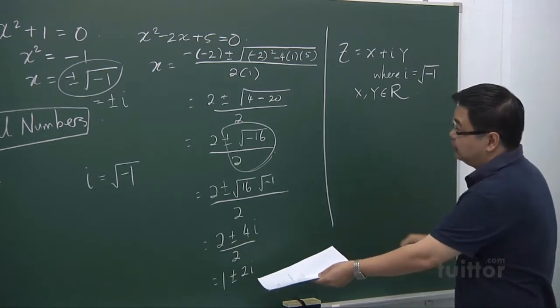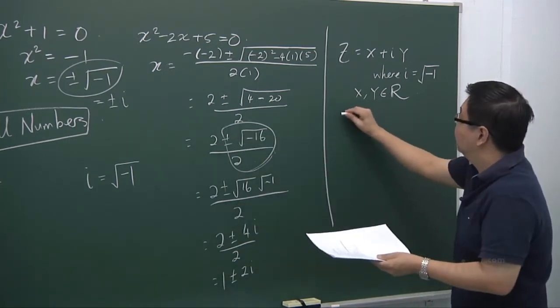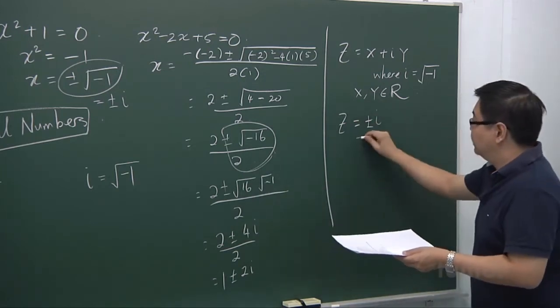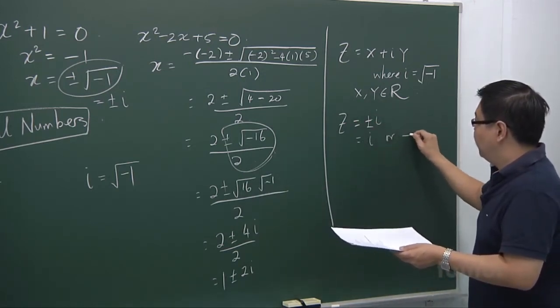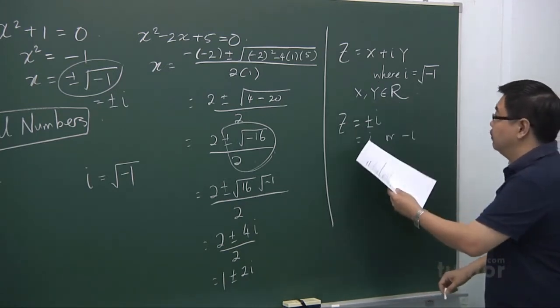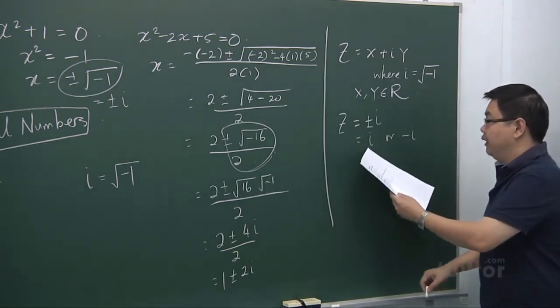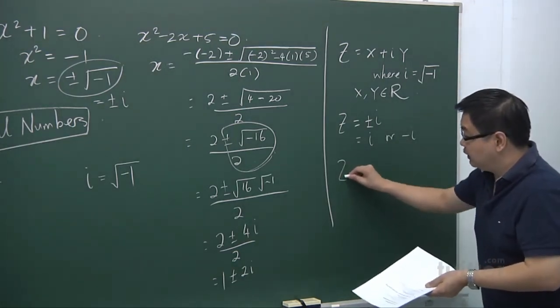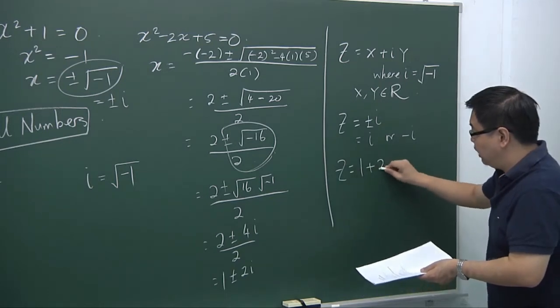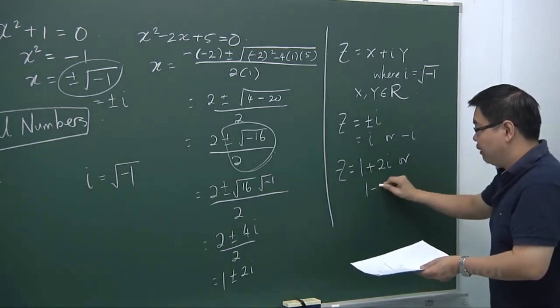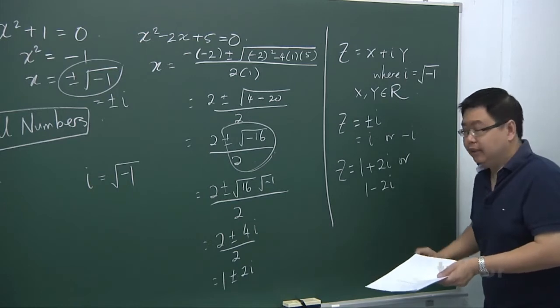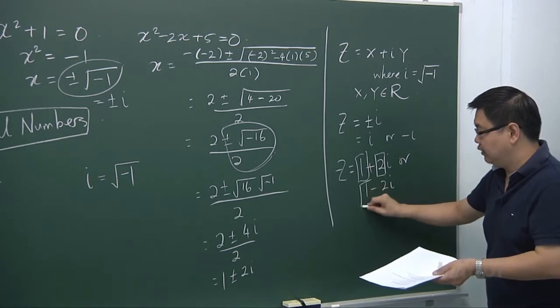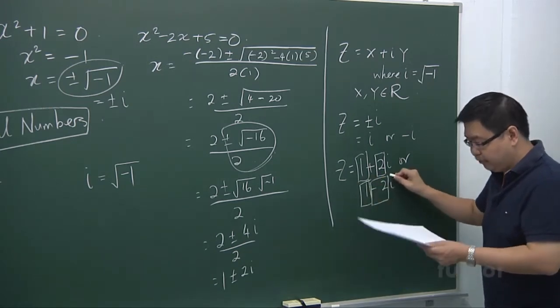So in other words, for example, in the first example, our z is plus minus i. That means it's either i or minus i. So the x value in this case is 0, y value is 1. And in this case, the x value is 0, the y value is minus 1. In the second example, we have 1 plus 2i or 1 minus 2i. In this case, the x is 1, the y is 2. And in the second case, the x is 1, y is negative 2.